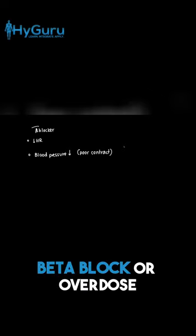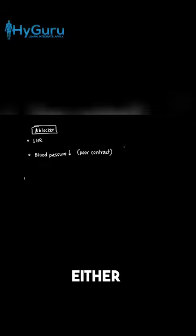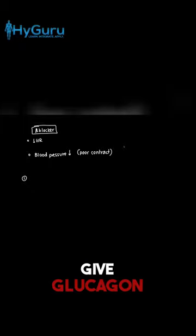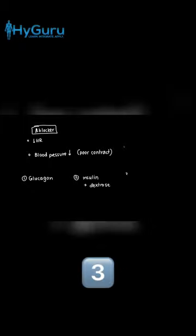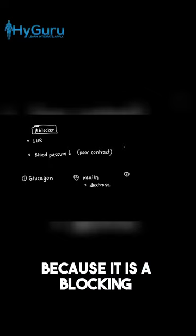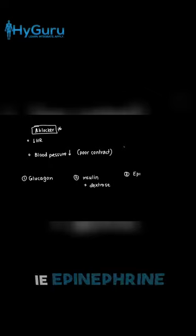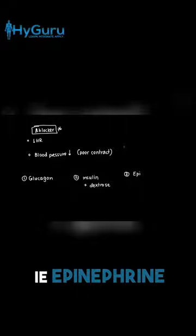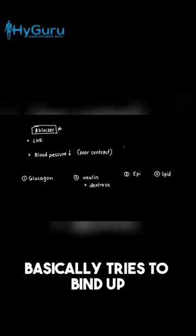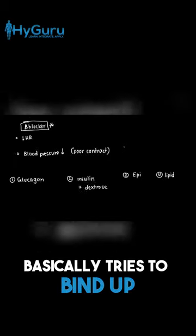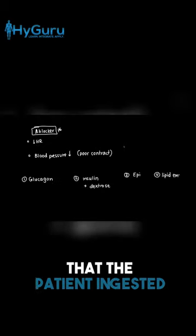Now, with beta blocker overdose, the goal is to either: one, give glucagon; two, insulin as well as dextrose; three, because it is a blocking of the sympathetics, you want to give sympathetics, i.e. epinephrine; or in refractory cases, lipid emulsions — which basically tries to bind up all of the beta blockers that the patient ingested.